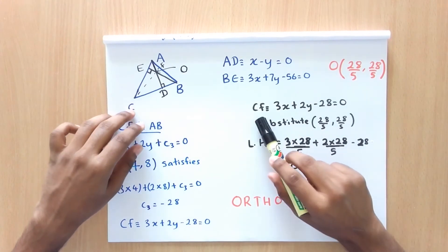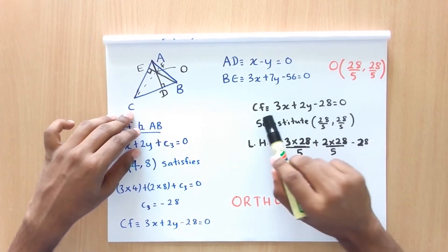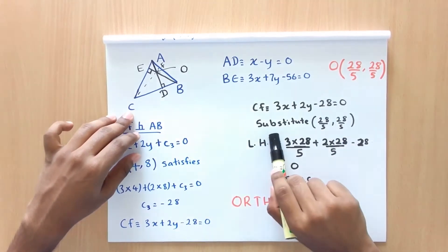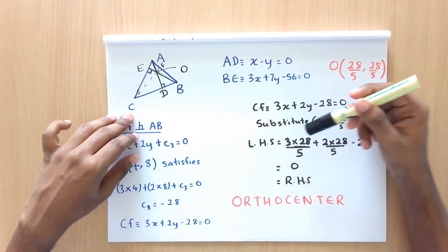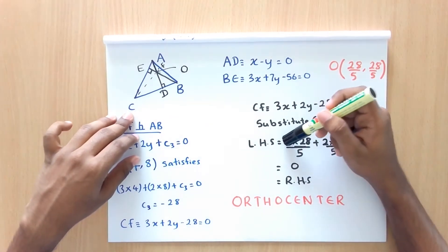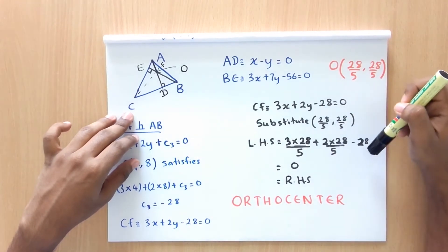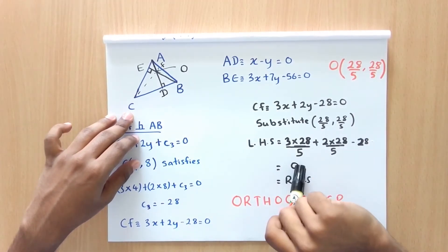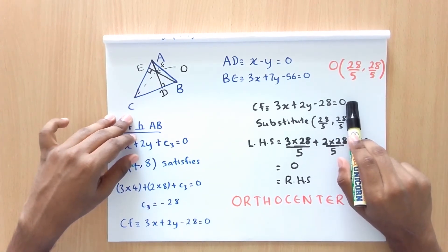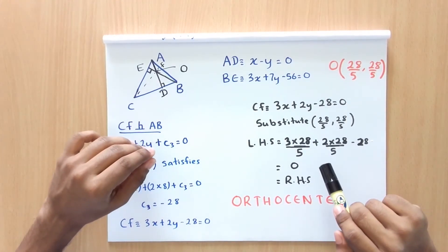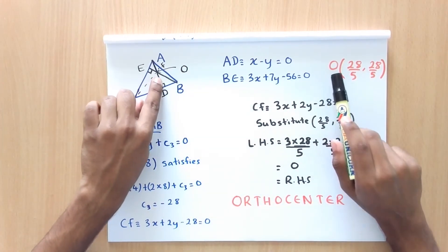To check whether this line passes O, we substitute the coordinates of O into this equation. So when we substitute 28 over 5, 28 over 5 into this, we get the left hand side as 3 into 28 over 5 plus 2 into 28 over 5 minus 28. And we get the answer as 0. So this is equal to the right hand side. So this means that all three altitudes pass through the same point O.